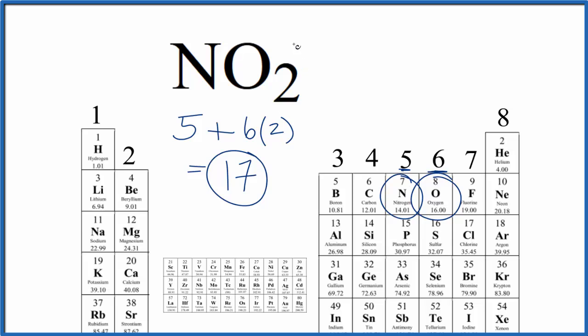But what if you have NO2-? That kind of changes things. NO2- is the nitrite ion, and it's very different than this nitrogen dioxide. If we had NO2-, the charge on the whole nitrite ion would be 1-.